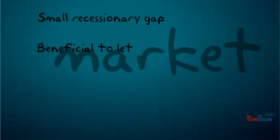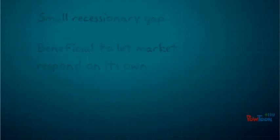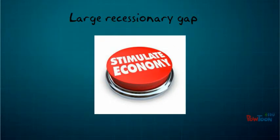If the recessionary gap was small, it would be beneficial to let the market respond on its own. However, this recessionary gap is too large, so the government will have to enable discretionary fiscal policy to bring the Canadian economy back to macroeconomic equilibrium.